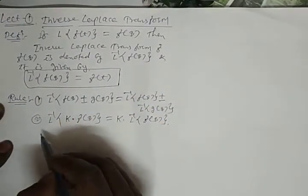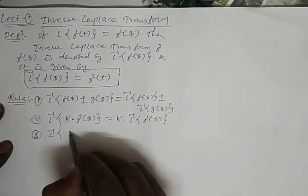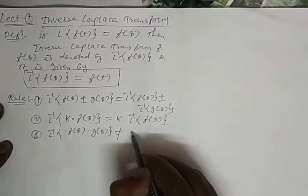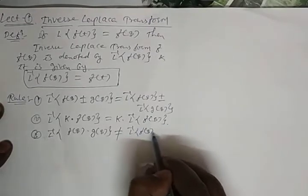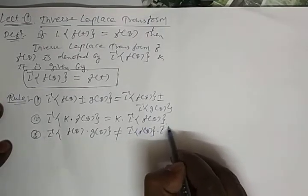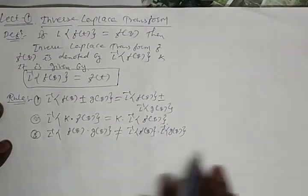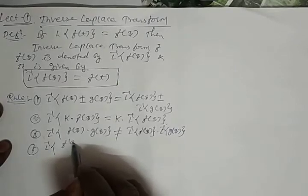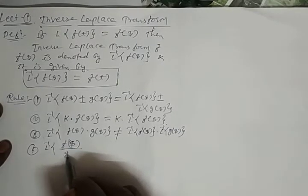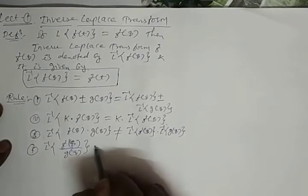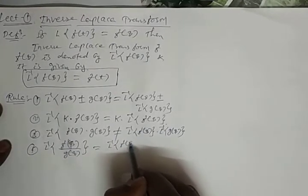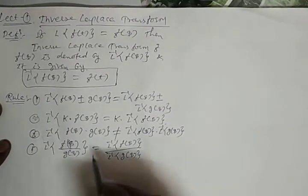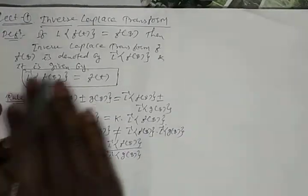Remember, L⁻¹{F(s)·G(s)} is not equal to L⁻¹{F(s)} times L⁻¹{G(s)} — we cannot write this. Similarly for division: L⁻¹{F(s)/G(s)} also cannot be written as L⁻¹{F(s)} divided by L⁻¹{G(s)}. So this is not true.